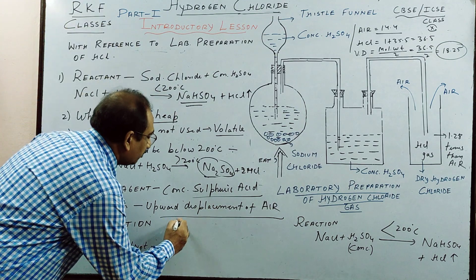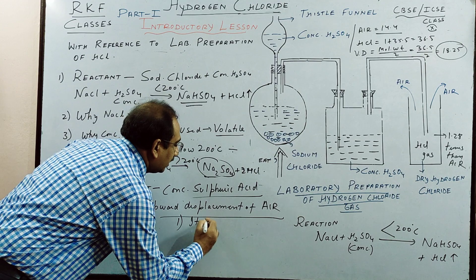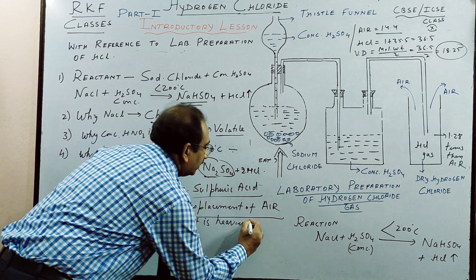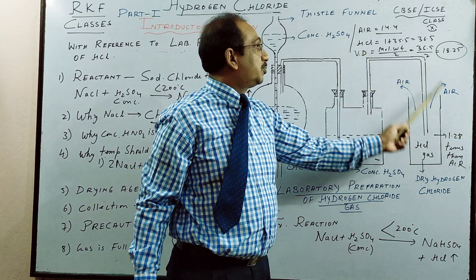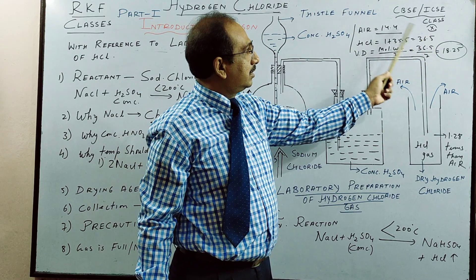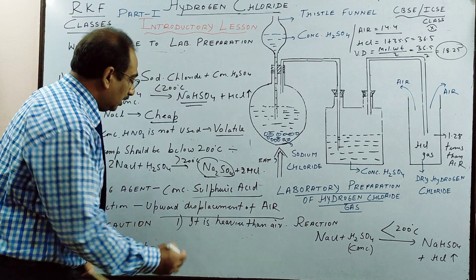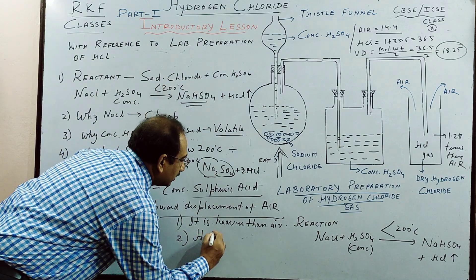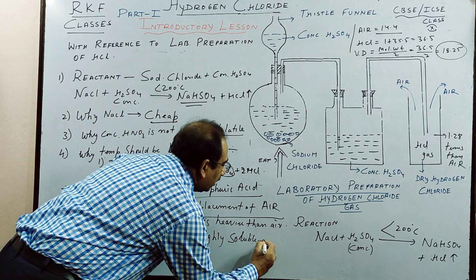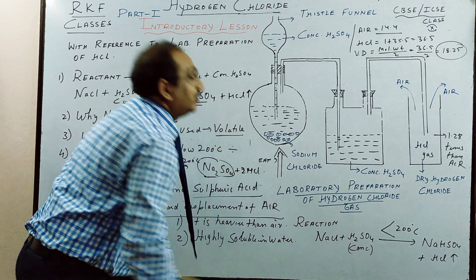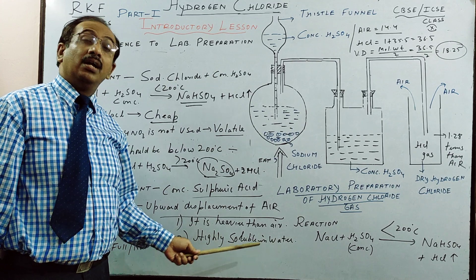Two reasons why we use upward displacement of air: number one, it is heavier than air — 18.25 vapour density versus 14.4 for air, making it 1.28 times heavier; number two, it is highly soluble in water, so we don't collect it over water. We have a separate experiment called the Fountain Experiment to prove the high solubility of HCl as well as ammonia.